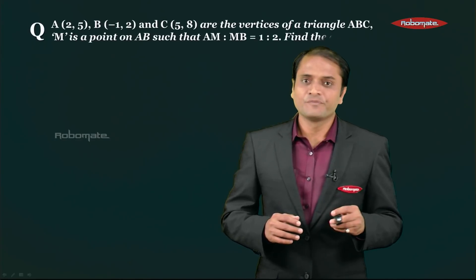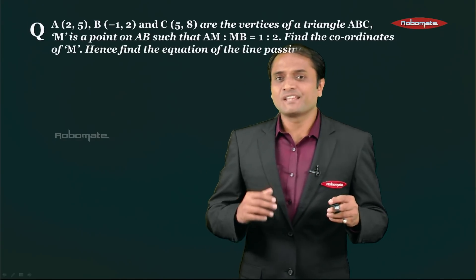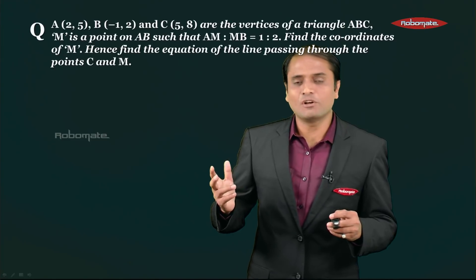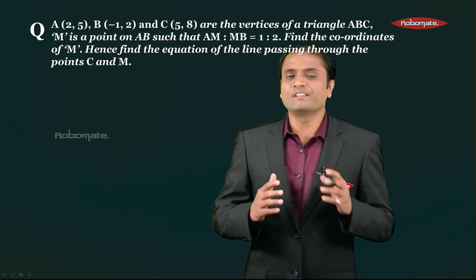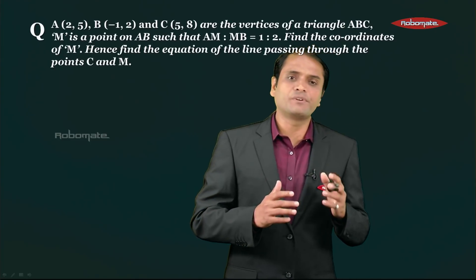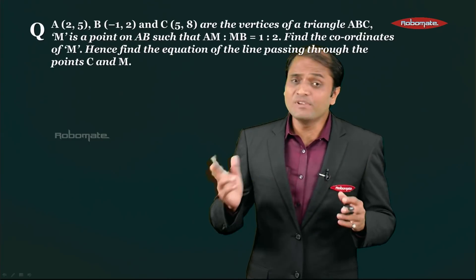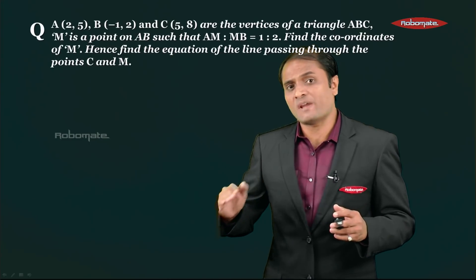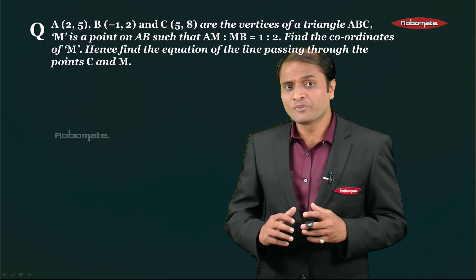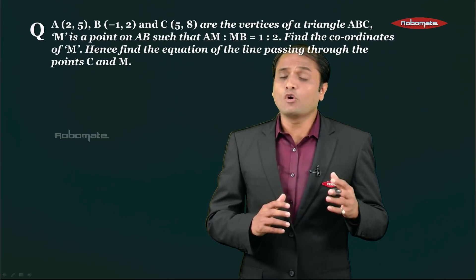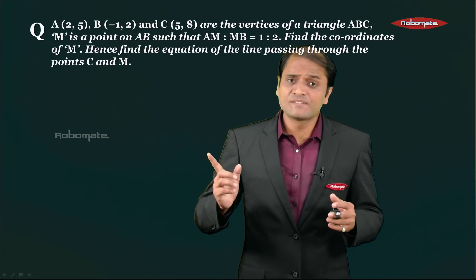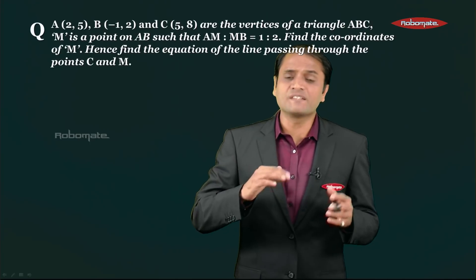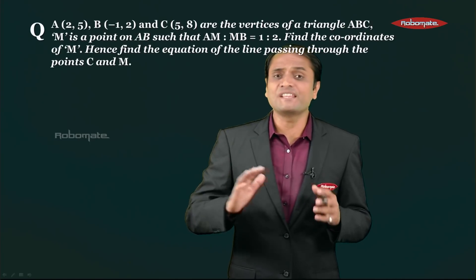So here is the question. A(2,5), B(-1,2) and C(5,8) are the vertices of a triangle ABC. M is a point on AB such that AM to MB is equal to 1 to 2. Find the coordinates of M, hence find the equation of the line passing through the points C and M.